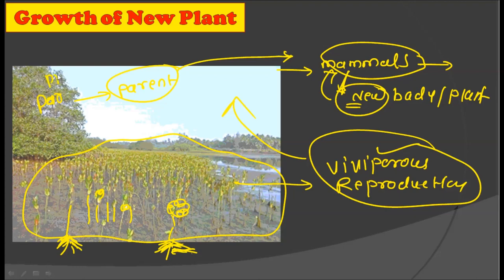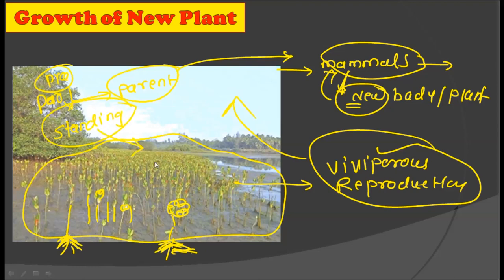To summarize: the propagules develop on the plant itself, then they have their dispersal period depending on the different species of mangroves. After falling off onto the ground, they have a standing period as well. After the dispersal period and standing period, they start germinating and grow into a whole new mangrove plant.